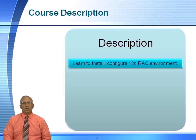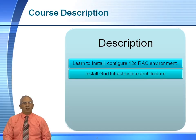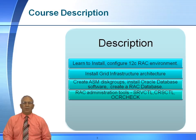We will learn to install and configure an Oracle 12C RAC environment — in this case it will be in a Linux environment. We will install a grid infrastructure architecture, as well as create ASM disk groups, install and create an Oracle 12C RAC database. We will use the RAC administration tools, such as SRVCTL, commonly referred to as server control, as well as CRSCTL and OCR check.